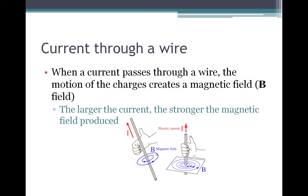To determine how an inductor behaves, we need to think about something learned in physics. When a current is passed through a wire, the motion of the charges through the wire results in a magnetic field. The larger the current, the stronger the magnetic field that is produced. We can use the right-hand rule to determine the direction that the magnetic field rotates around the wire that the electric current is passing through.